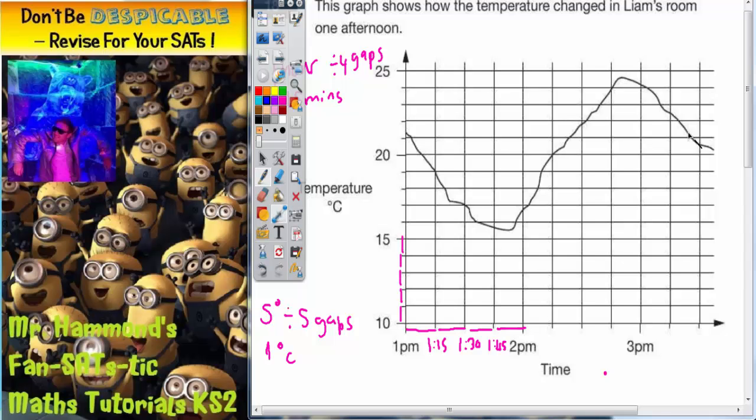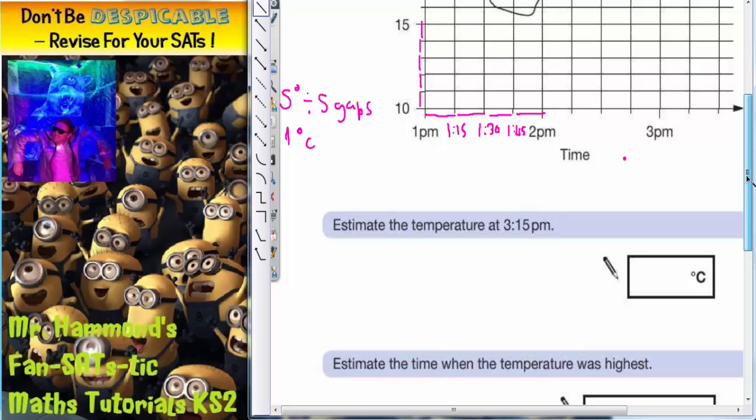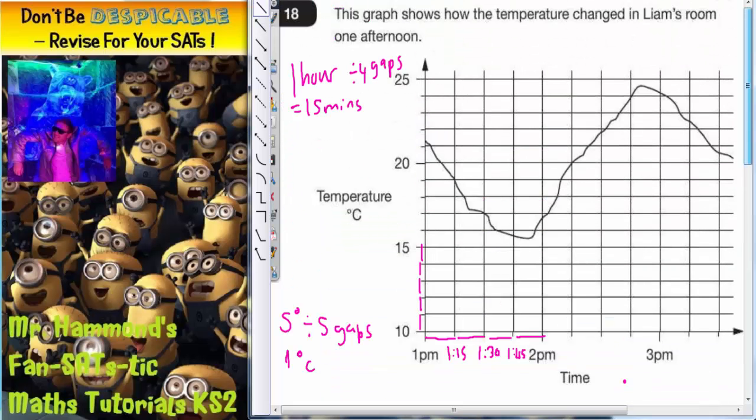Now let's see what we've actually got to do. It says estimate the temperature at 3:15 p.m. Well, this line here is 3 p.m., so every time we go up a gap, we go up 15 minutes. So if this one is 3 p.m., this line must be 3:15 p.m. So we need to draw a line straight up from 3:15 p.m. to the graph there.